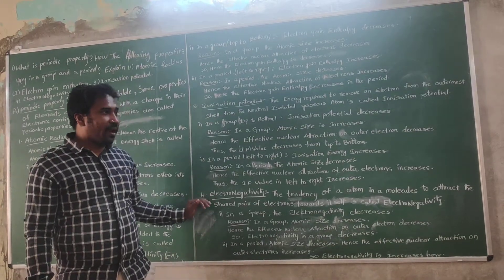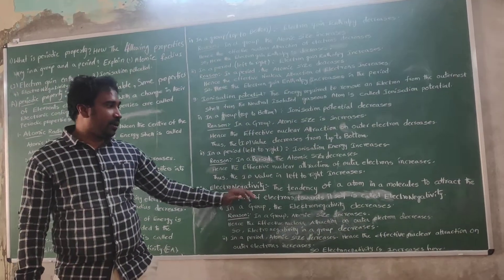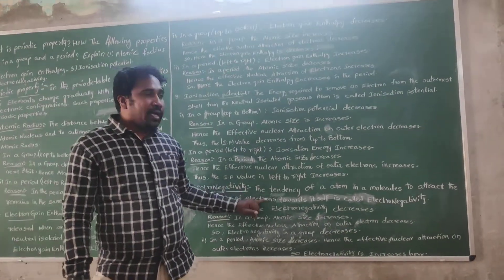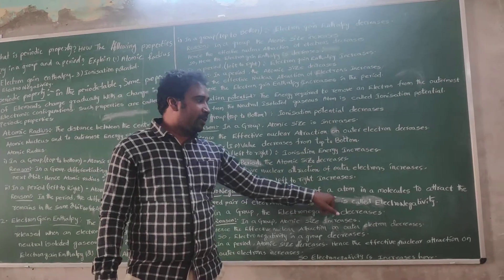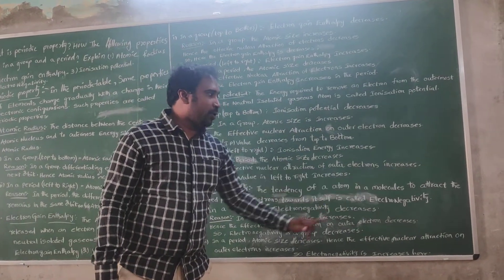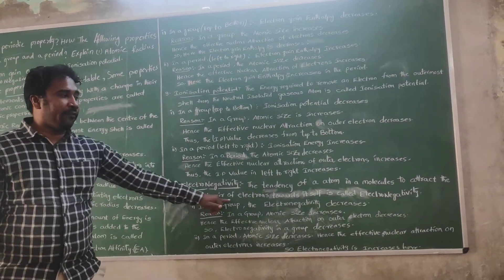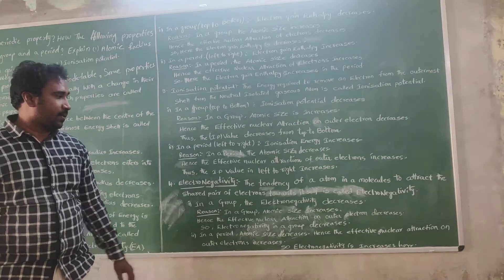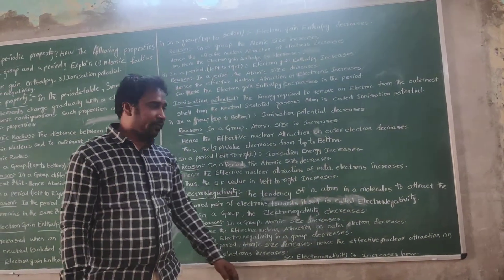The last point is that electronegativity decreases in a group. The tendency of an atom is related to the shared electrons in the atom. In other words, it is a property of the atom.